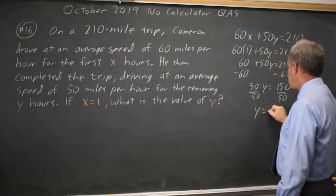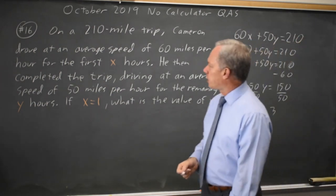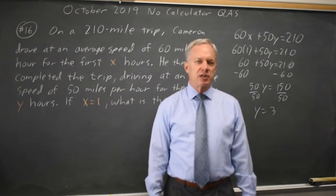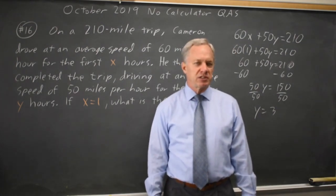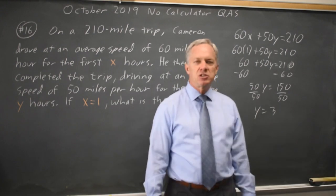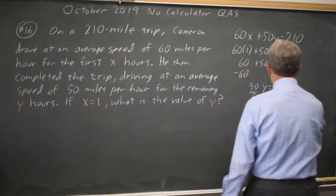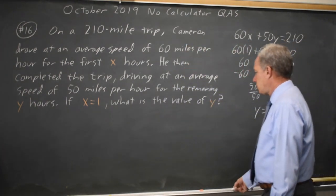And Y equals 3. In 1 hour at 60 miles per hour plus 3 hours at 50 miles per hour, you drive 60 plus 150, which is 210. So the correct answer would be 3.